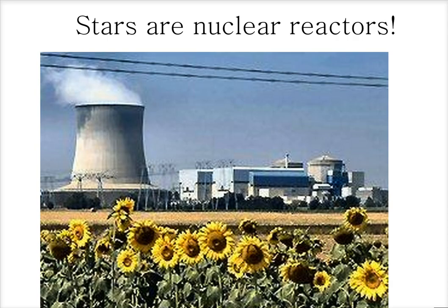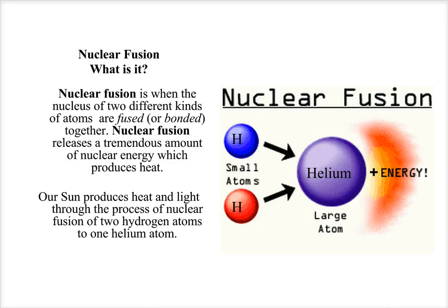The first important thing to bring up is that stars are powerhouses. They are nuclear reactors and they carry out the process of nuclear fusion, which is when the nuclei of two different kinds of atoms are fused or bonded together. Two hydrogen nuclei fuse together to form a helium atom, and this produces an enormous amount of energy which produces heat and starlight. Our Sun and all stars produce heat and light through nuclear fusion.